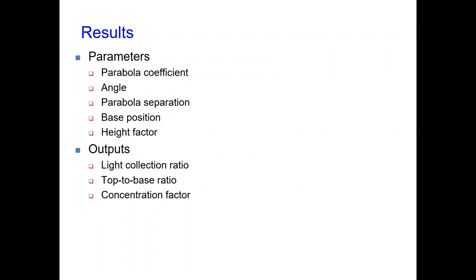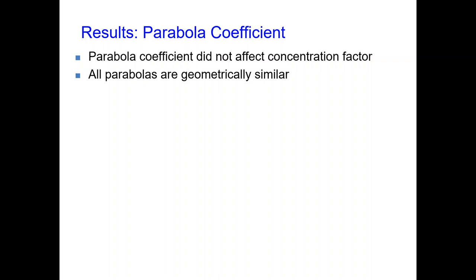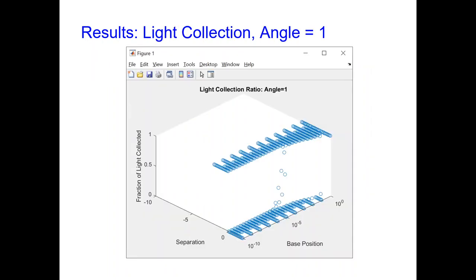Moving on to the results, we tested the effects of changing these parameters on the light collection ratio, top-to-base ratio, and concentration factor of different concentrators. The height factor is set to the maximum possible height where a collision did not occur. Our first finding was that changing the parabola coefficient did not affect the light collection ratio or the top-to-base ratio, and therefore did not affect the concentration factor. This is likely because all parabolas are geometrically similar to each other. Therefore, for the rest of the results, we tested the effects of base position, parabola separation, and angle on the output variables.